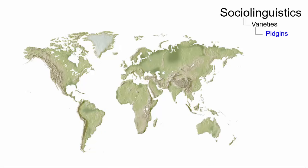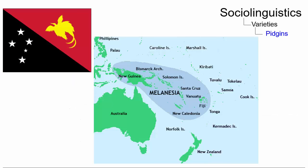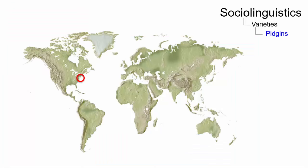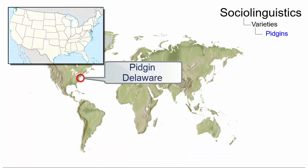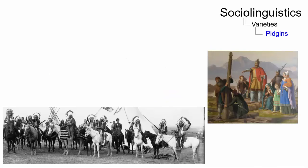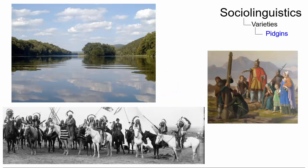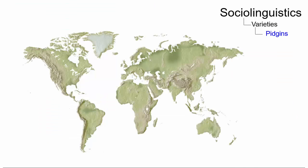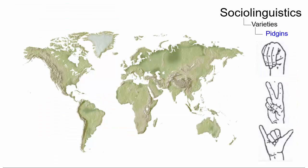There are many examples of pidgin languages seen around the world. For instance, Tok Pisin is an English creole language that developed from a trade pidgin in Papua New Guinea. Additionally, Pidgin Delaware was a pidgin language spoken between speakers of Unami Delaware and Dutch settlers on the Delaware River in the 1620s. Lastly, international sign language is a contact variety of sign language that is often used in international meetings of the deaf.